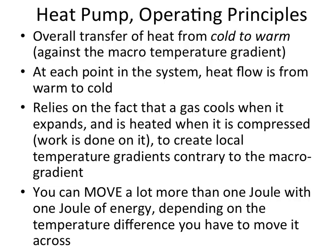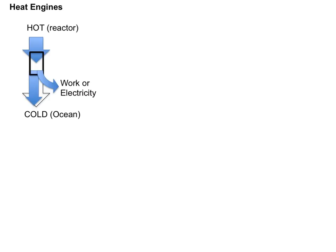Let's review heat engines and talk about how heat pumps work. For heat engines, heat likes to flow from hot to cold — like from the hot reactor to the cold ocean. We can make use of this by putting a turbine in between, getting work or generating electricity out of it. The hot heat turns into cold heat and work, and we conserve energy.